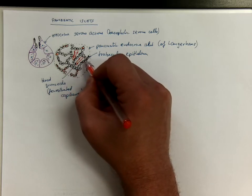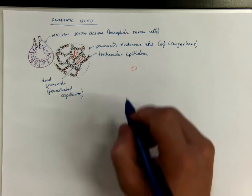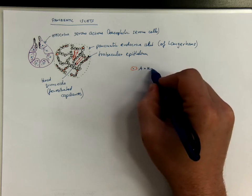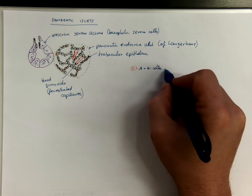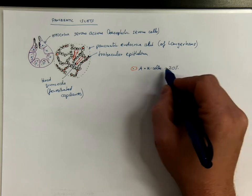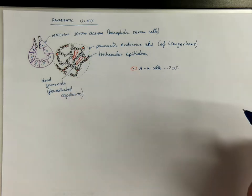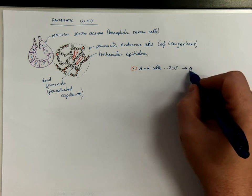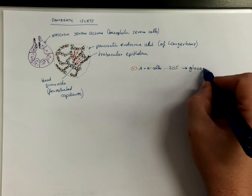They form approximately 20%, A or alpha cells, approximately 20% of the population of the islet. And they are producing a hormone called glucagon.